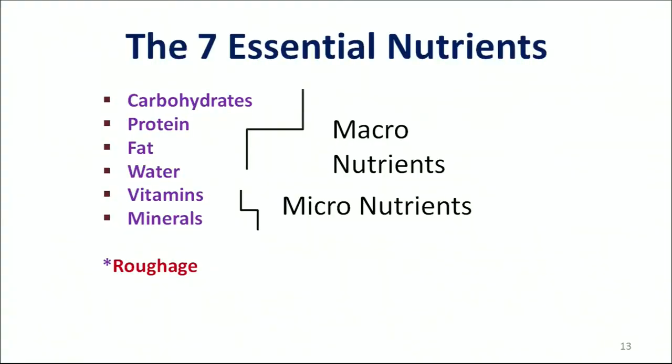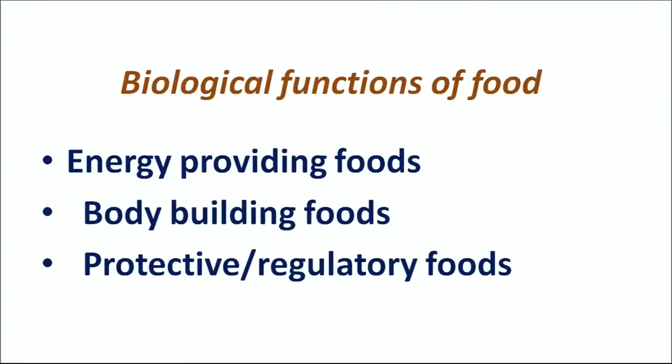There are basically seven essential nutrients found in any food item. Carbohydrates and proteins are the major macronutrients, while vitamins and minerals form the category of micronutrients, and then there is roughage. On the basis of biological functions, food is divided into three categories: energy-providing foods, body-building foods, and protective or regulatory foods.